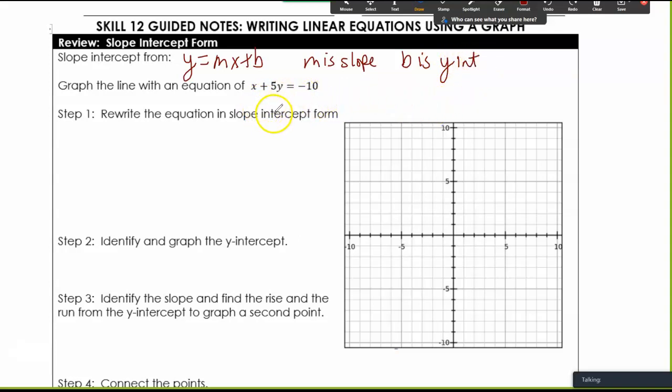It's asking us to graph the line of an equation using x plus 5y equals negative 10. We want to rewrite it in slope intercept form. I'm going to get my y by itself, then I want to divide both sides by 5. Y equals negative one-fifth x minus 2.